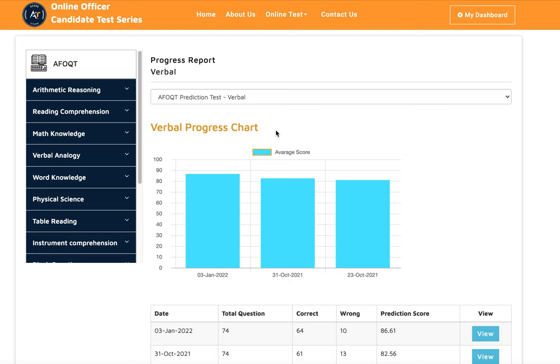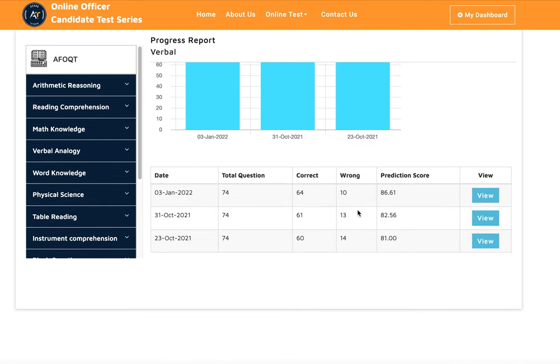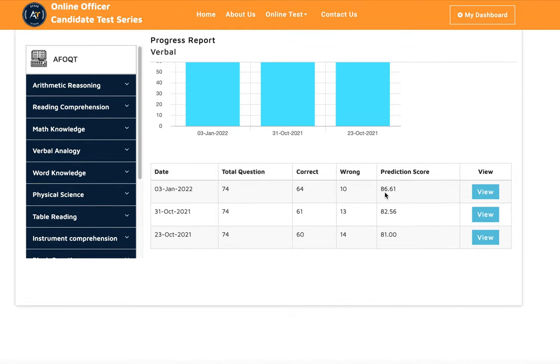The next one is she took a verbal analogy test. You can see her scores in verbal analogy are 86, 82, and 81.